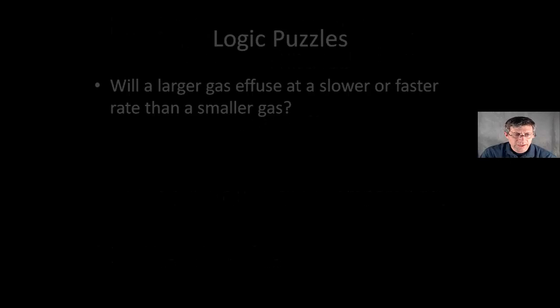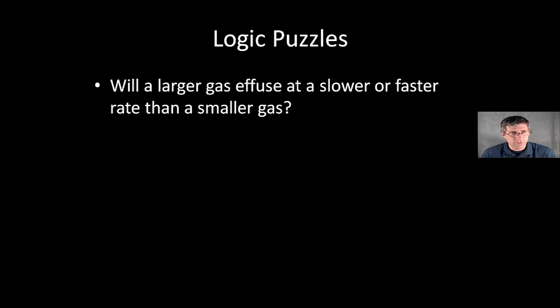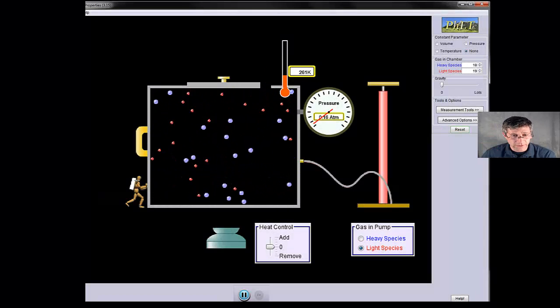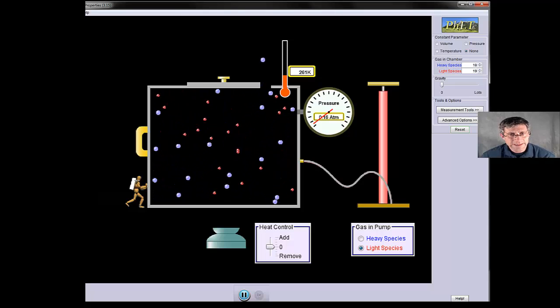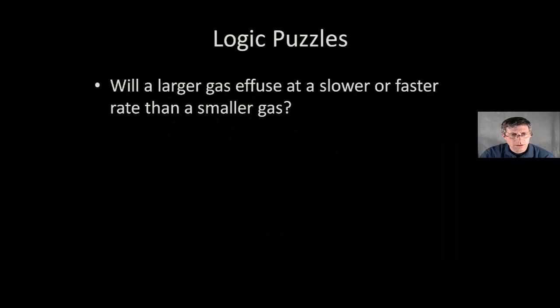Let's try a couple of logic puzzles. And that's all this really is, just a logic puzzle. If you can remember the connection between the kinetic energy and that relationship between velocities, then you should be able to rationalize your way through this. First question: Will a larger gas effuse at a slower or faster rate than a small gas? Let's think about velocity. My larger gas is moving at a slower velocity. So we can observe this here. My slower gases are just less likely to run into that little hole. My smaller gases are moving more quickly. They're going to effuse more quickly. So as a logic puzzle, I would want to predict that a larger gas will effuse more slowly than a smaller gas, based just solely upon the velocities.